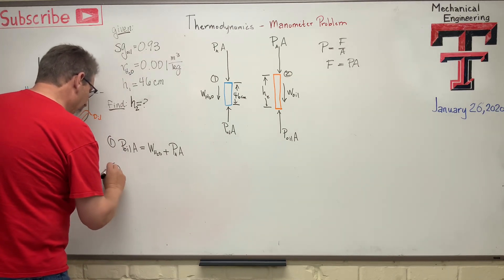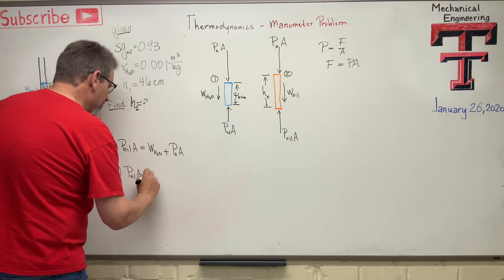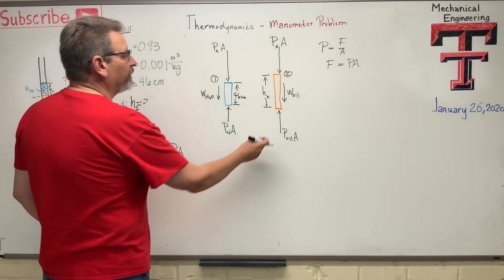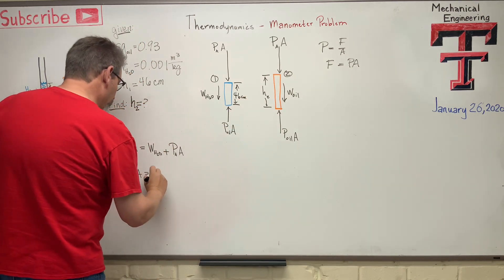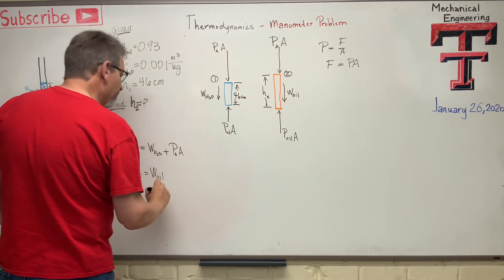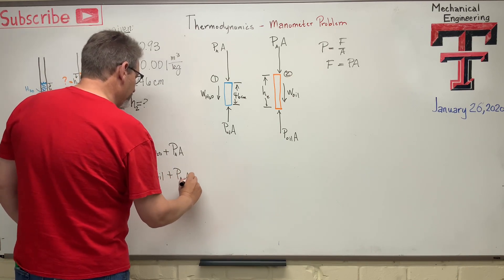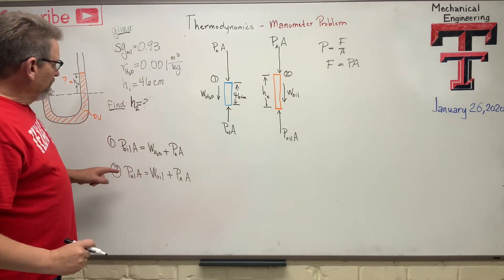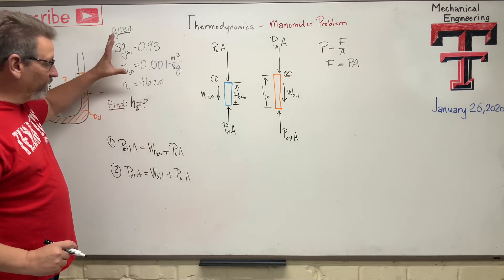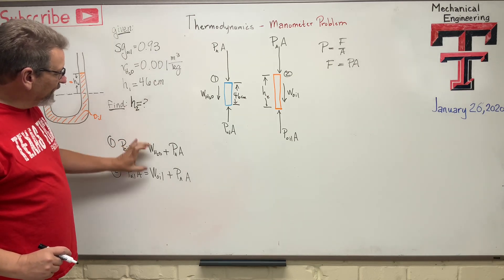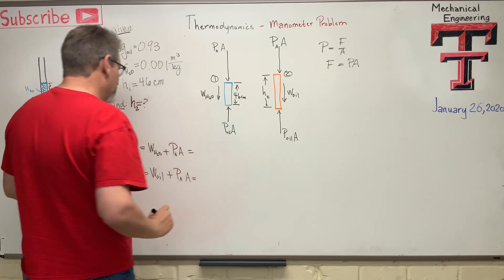And system number two, same thing, P oil A is equal to, there's the up stuff, what's the down stuff? That guy and that guy. Okay, so W oil plus PA times A. So do we have the weight of the water? We don't have it. We've got it in another form. So let's see if we can manipulate these Ws and maybe we can figure this out. So let's rewrite that equation one more time.